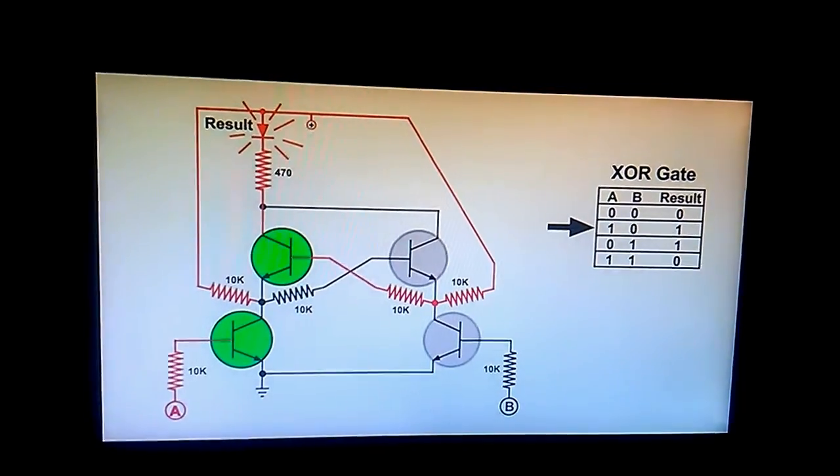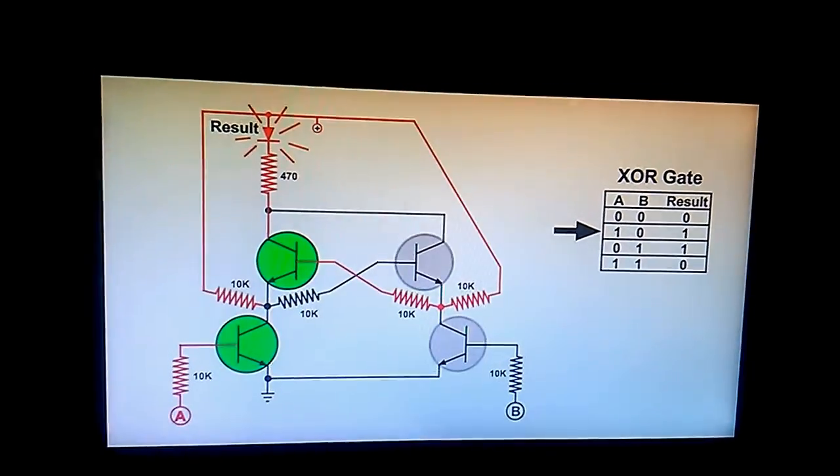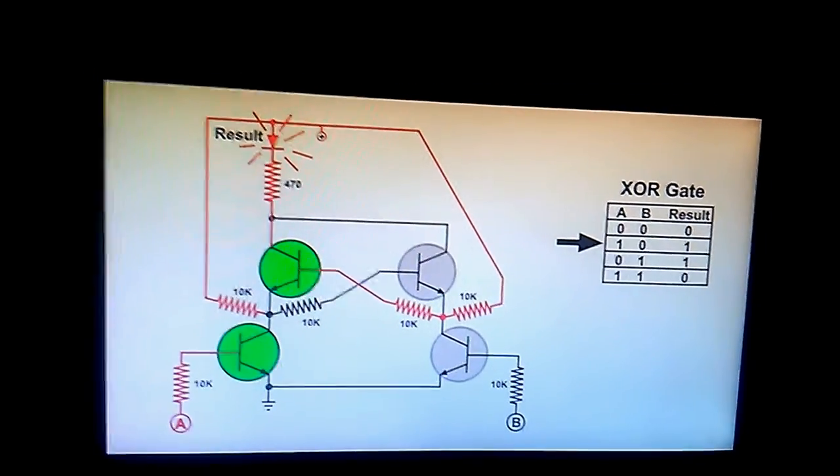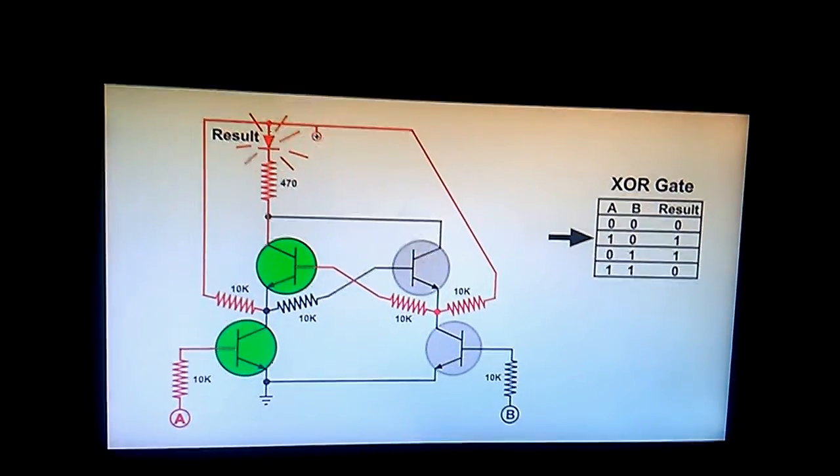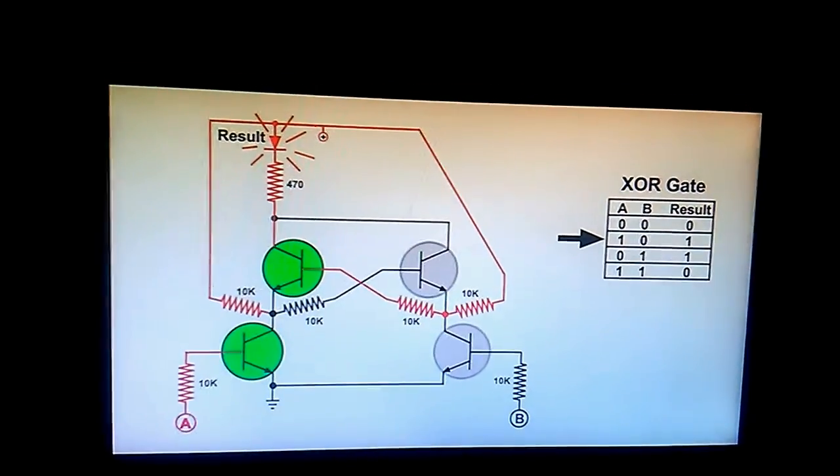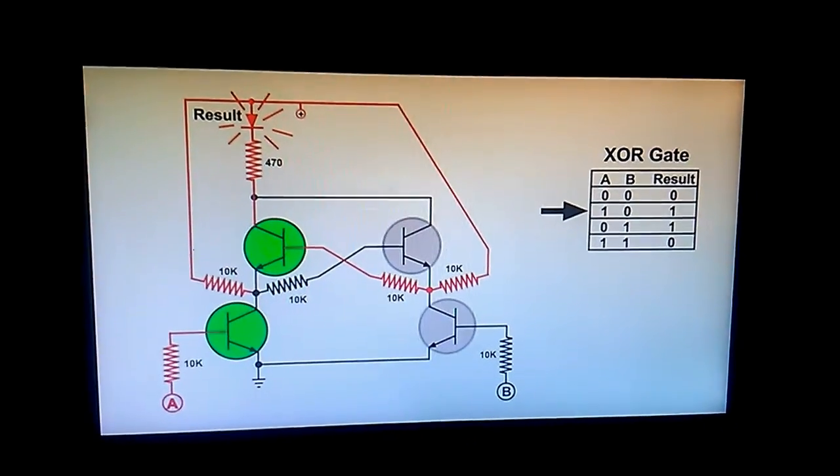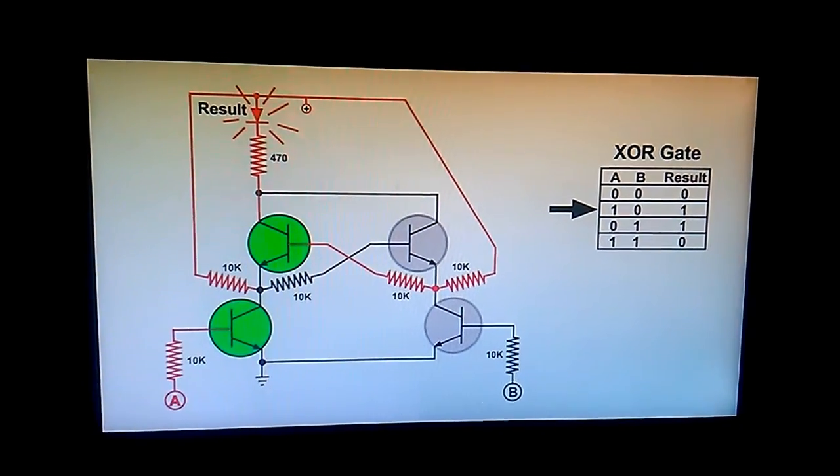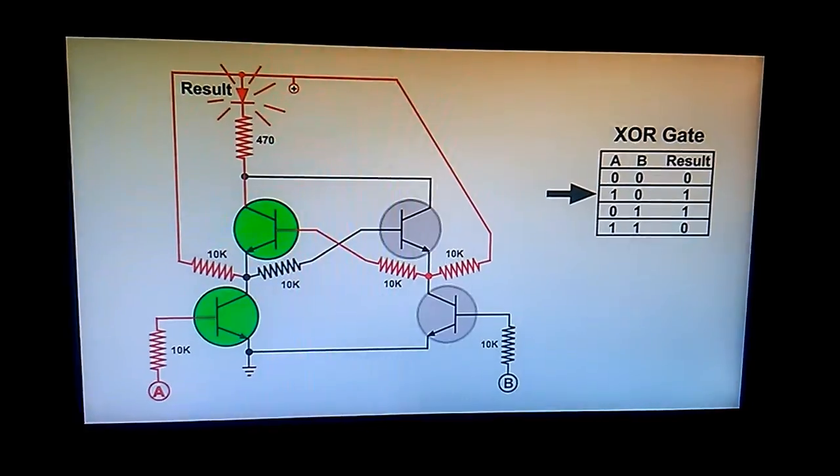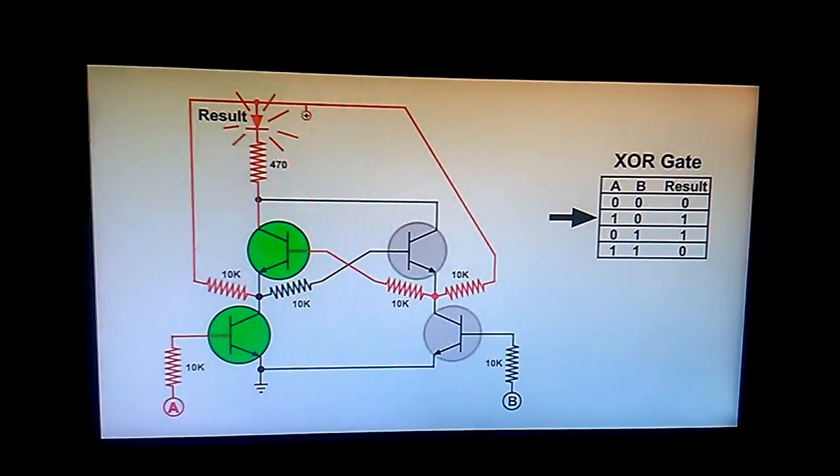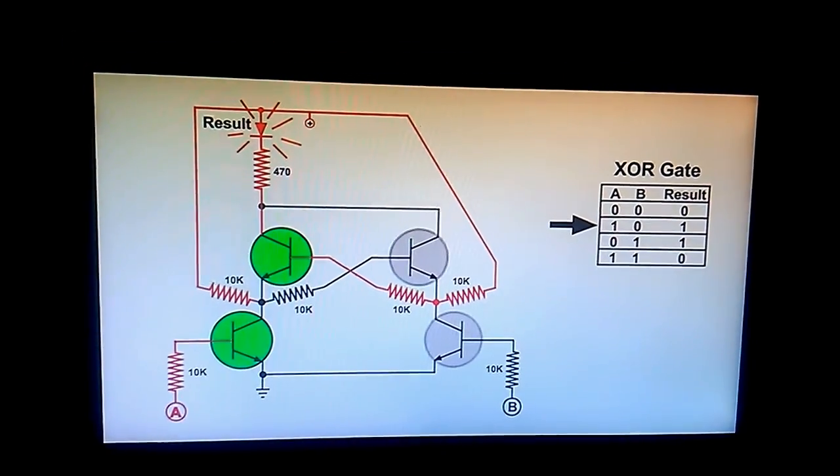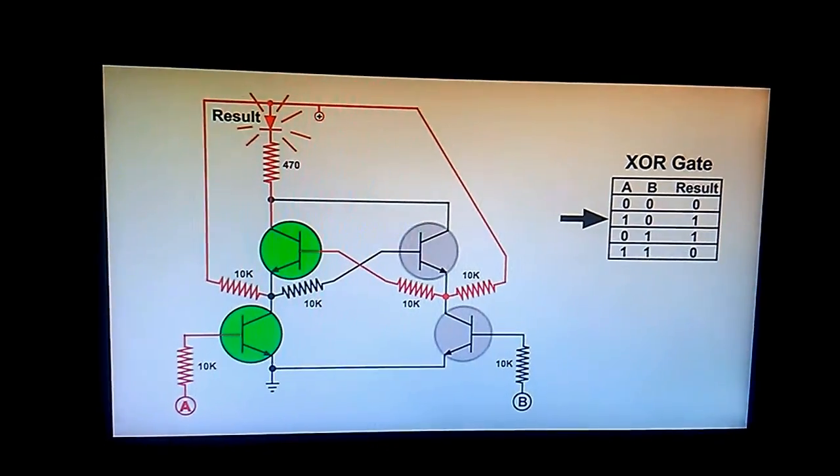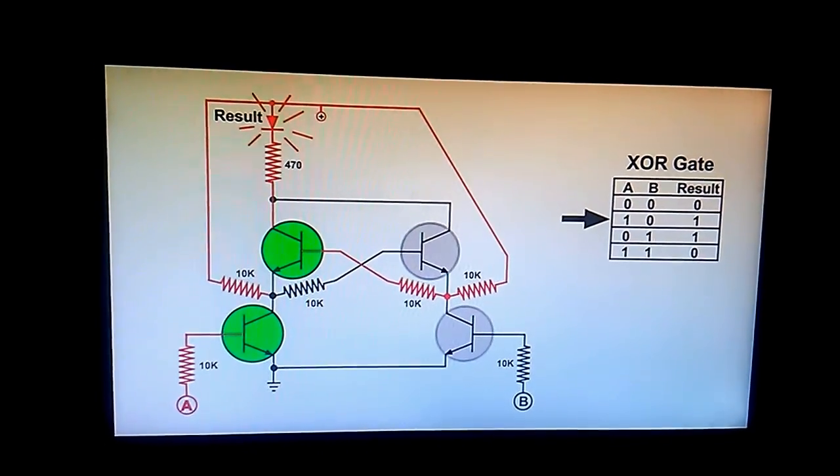The bottom left transistor at the collector shorts out the bias for the top right transistor, turning it off. But now we have a path on the left. Both of those transistors are biased to conduct and we have our LED lit.